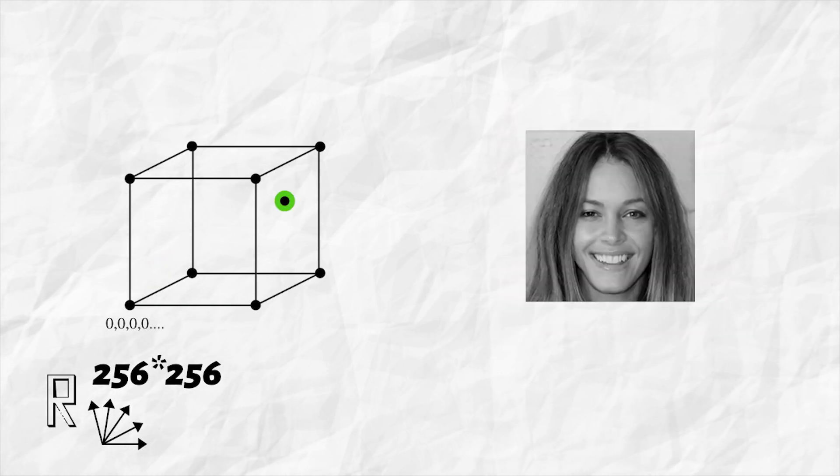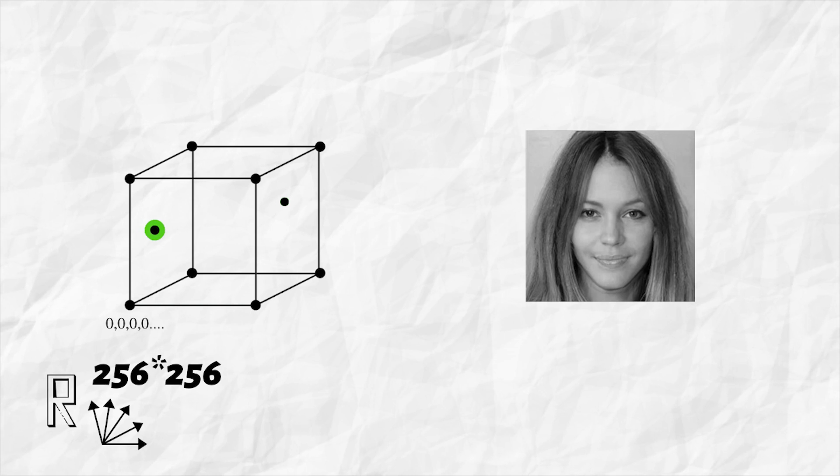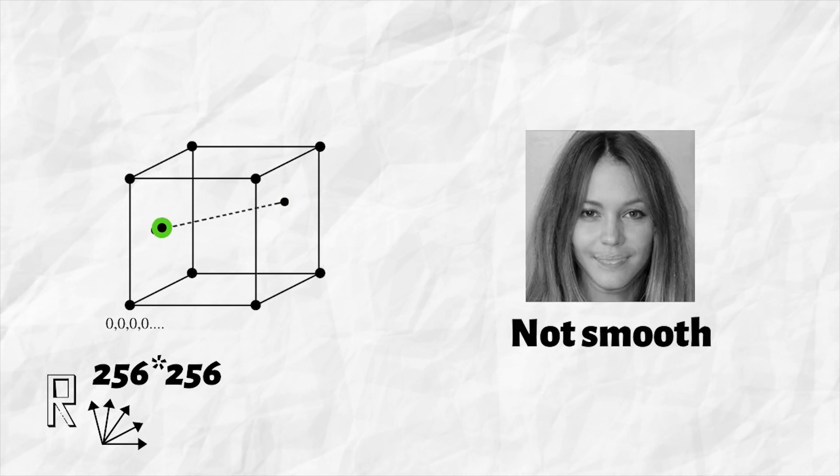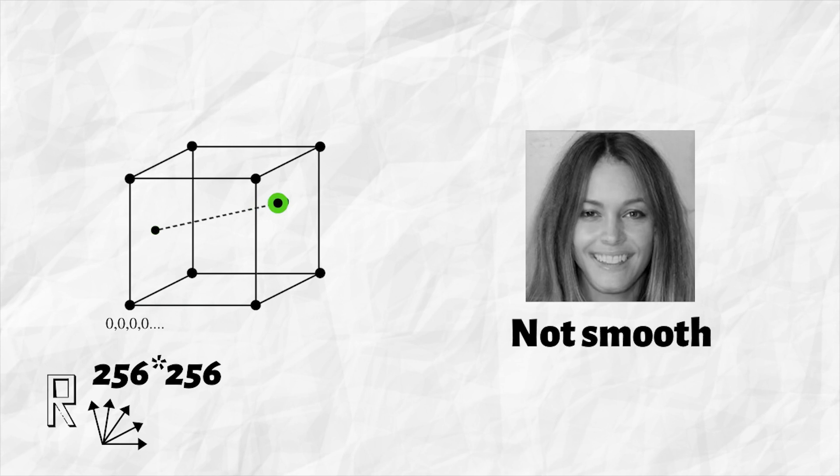This point is an image of a smiling girl and this point is an image of the same girl but with no smile. If we linearly travel between these two points, the transition is not smooth. That is, the intermediate points do not look like faces.